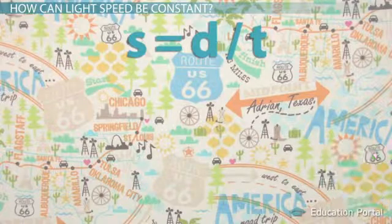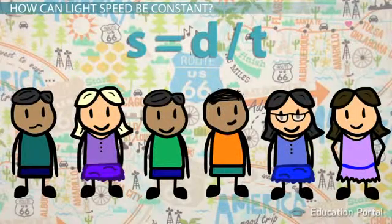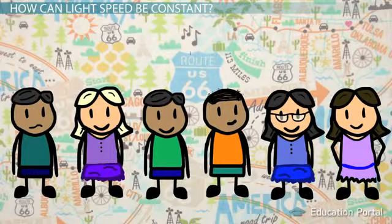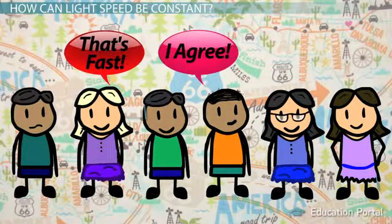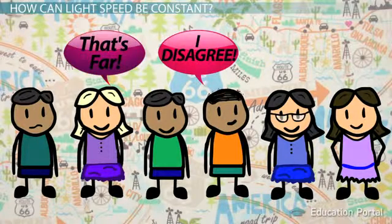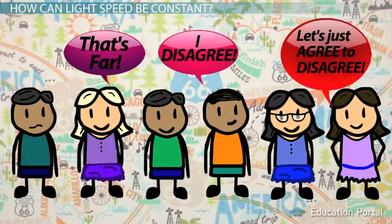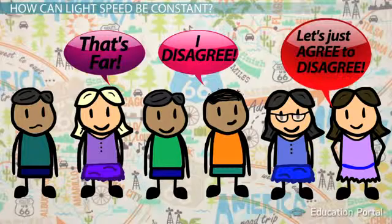Likewise, different observers can agree on the same speed of light if they disagree on distance and time. And as it turns out, both distance and time are relative to speed.